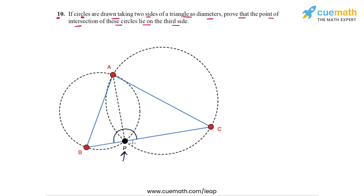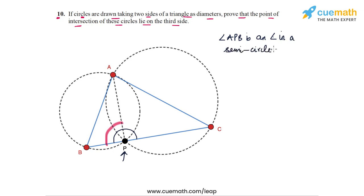First, we look at angle APB. This angle is an angle in a semicircle because AB is a diameter. Therefore, angle APB equals 90 degrees. — (1)